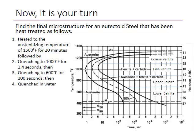Let's find the final microstructure for the same eutectoid steel under new conditions: austenitize, then quench to 1000°F for 2.4 seconds, then quench to 600°F for 300 seconds, then quench in water. Please pause the video and try to solve this problem before comparing with the solution.